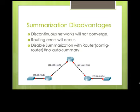Summarization can also be a disadvantage — it doesn't work with discontiguous networks. With that, routing errors can occur and it's not going to work properly. So you can disable automatic summarization, which is something I typically always do. Inside the router RIP configuration, you type 'no auto-summary', and that will disable automatic summarization and break out all the networks individually.